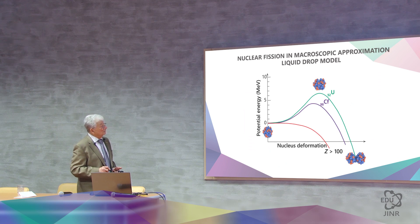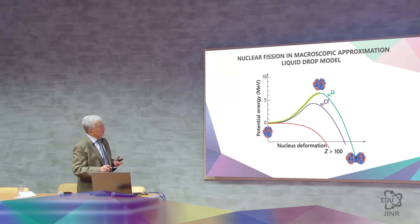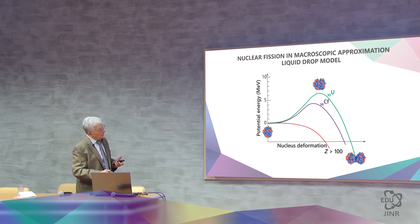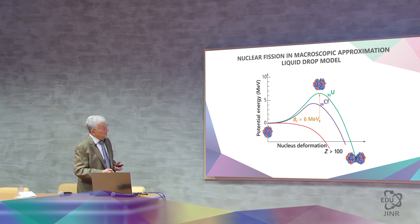So, here we have an image where, with an increase in the deformation of a drop, a charged drop, the potential energy rises to a critical value. After reaching the critical value, the potential energy drops, and it forms this configuration, and then this configuration breaks into two fragments. The magnitude of this rise is the division barrier.